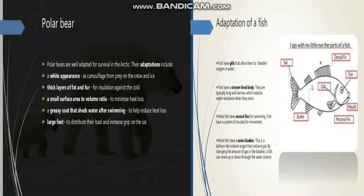The fourth adaptation is a greasy coat that sheds water after swimming. When they swim, their greasy coat easily removes water from the surface, which helps reduce heat loss. They can also remove ice and snow from their body.